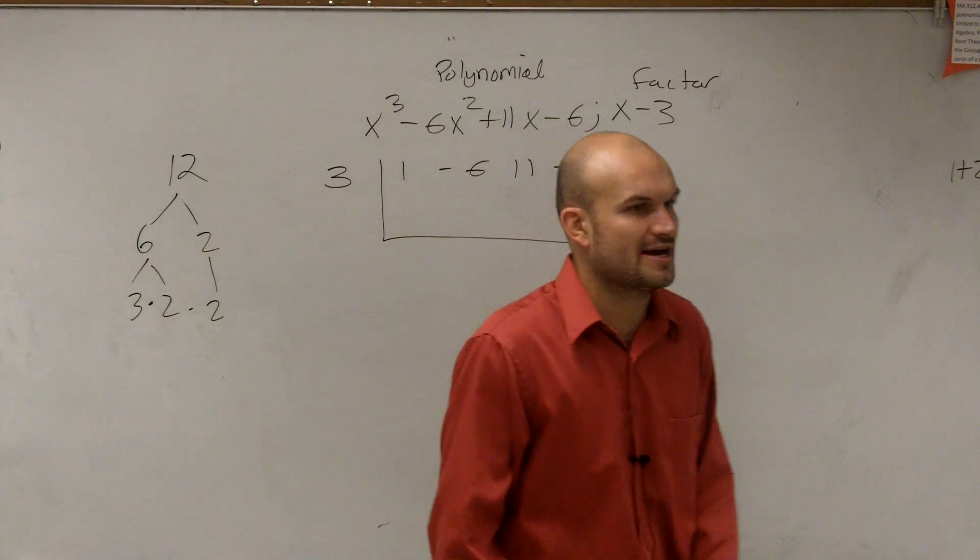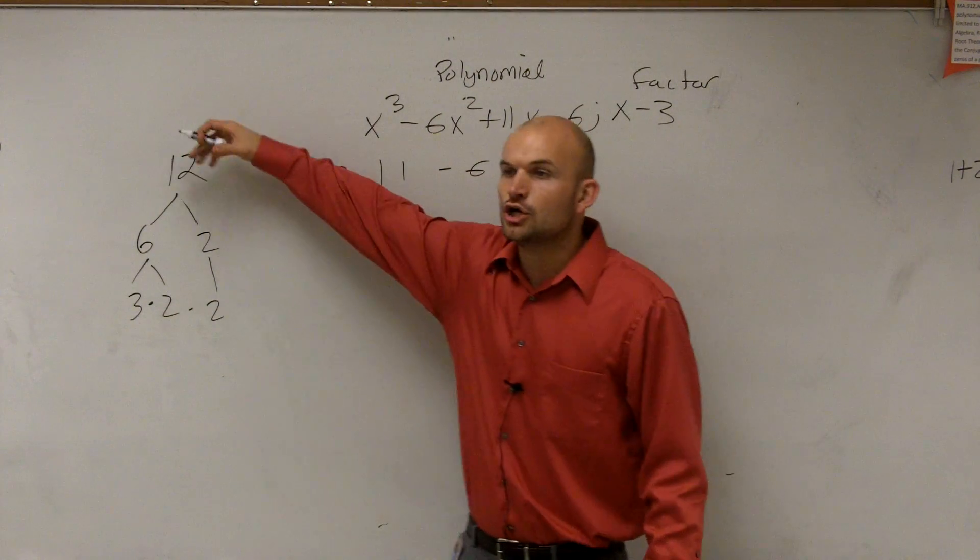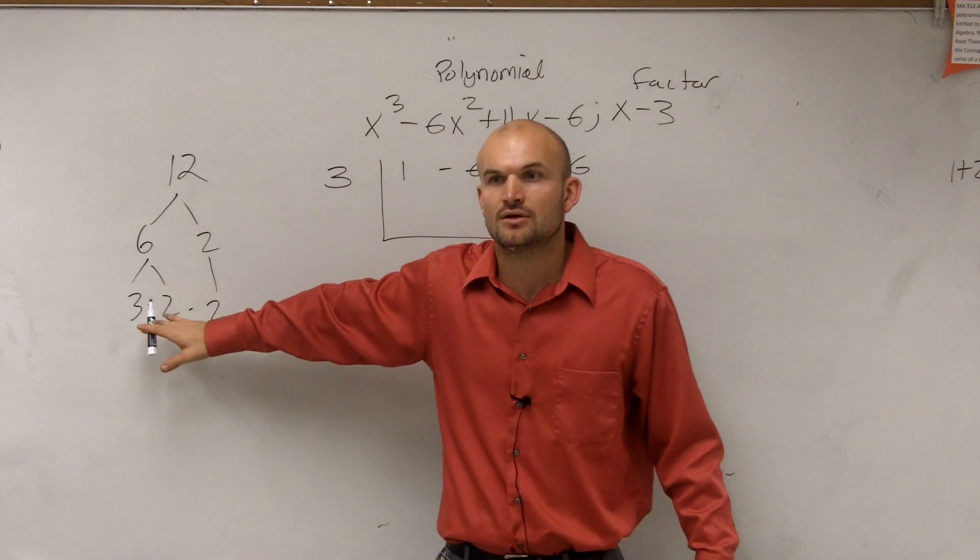Now, obviously, we know that 4 is also a factor that's not included in that problem, but when I say factor a number completely, you break it down to a product of prime numbers, which is 3 times 2 times 2.